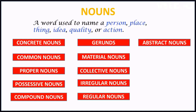Hey guys, what's up, welcome to English Language Shelf. In this video I will tell you about noun and its types, so let's mind over English. A noun is basically a word which is used to name a person, place, thing, idea, quality, or action. These are some characteristics of a noun.